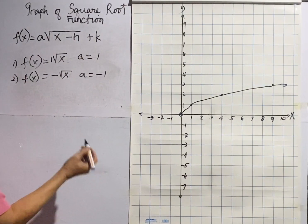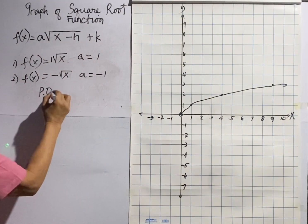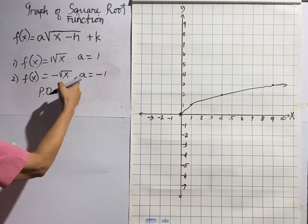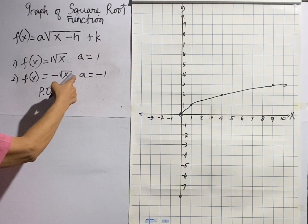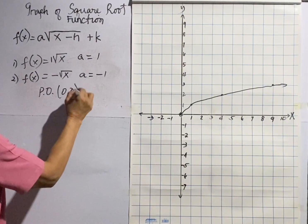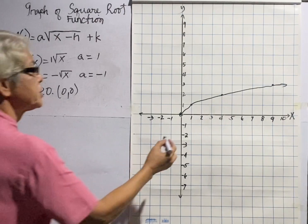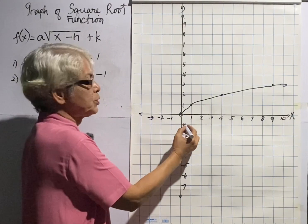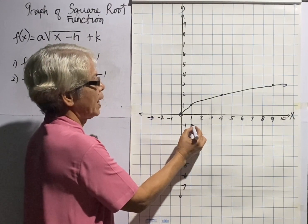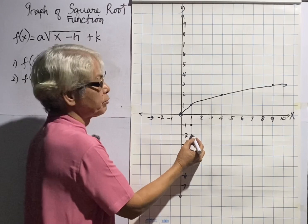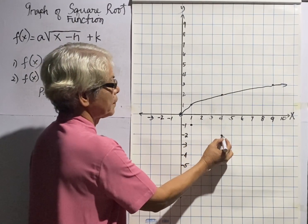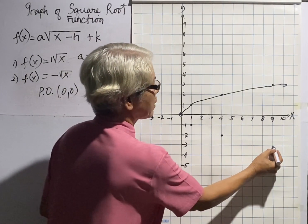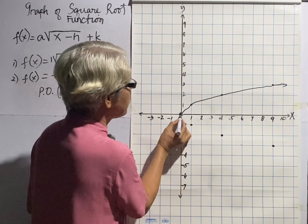Let us graph again. The point of origin: x is zero, and since there is no constant number outside the radical, the second coordinate is also zero. To graph it, we go down one unit and run one unit, then go down one unit and count three — one, two, three. This is now the graph of this function.